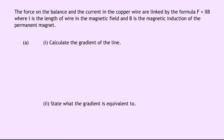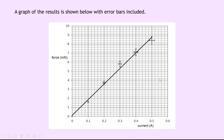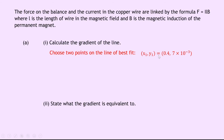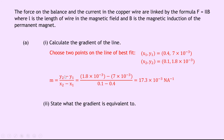Part A1 says to calculate the gradient of the line. To do this, we choose two points at either end of the line and calculate (Δy)/(Δx). I've chosen the points (0.4, 7×10⁻³) and (0.1, 1.8×10⁻³). Plugging these into the gradient equation gives us an answer of 17.3×10⁻³ newtons per ampere.